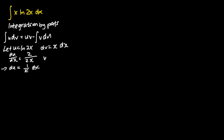To find my v, I will integrate dv, so that is the integral of x dx. This equals x squared over 2. And now I have found my u, dv, v, and du.